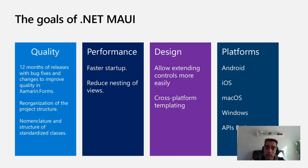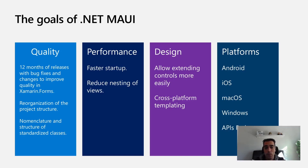Another goal is extensibility — including more UI APIs such as new layouts, new containers like the Border control to achieve different border effects, shadows, and more. The supported platforms are Android, iOS, macOS, and Windows, and importantly most APIs have parity across platforms. So if .NET MAUI includes a new API like shadows on Android and iOS, the same API must be implemented with the same capabilities on all other supported platforms as well.